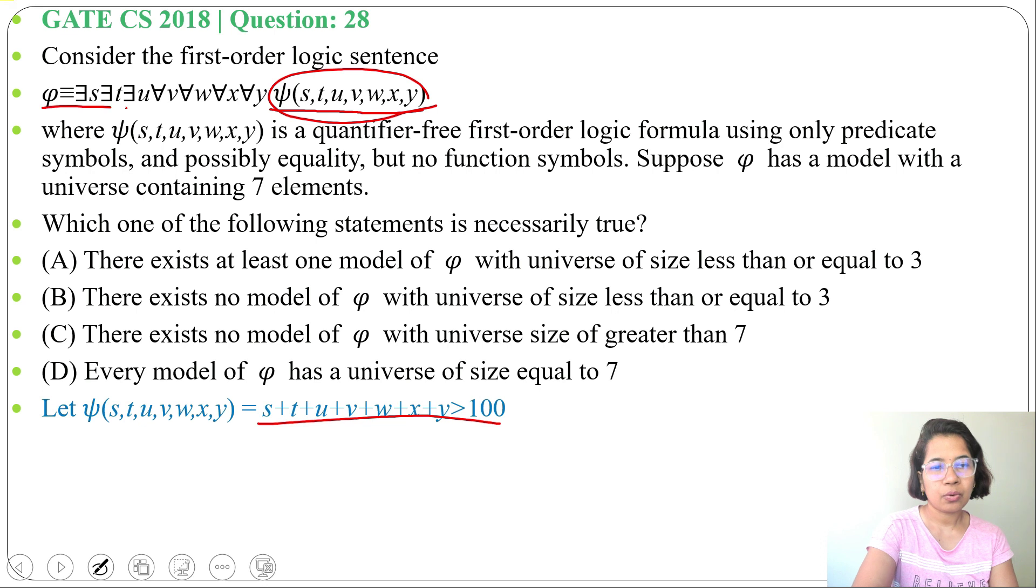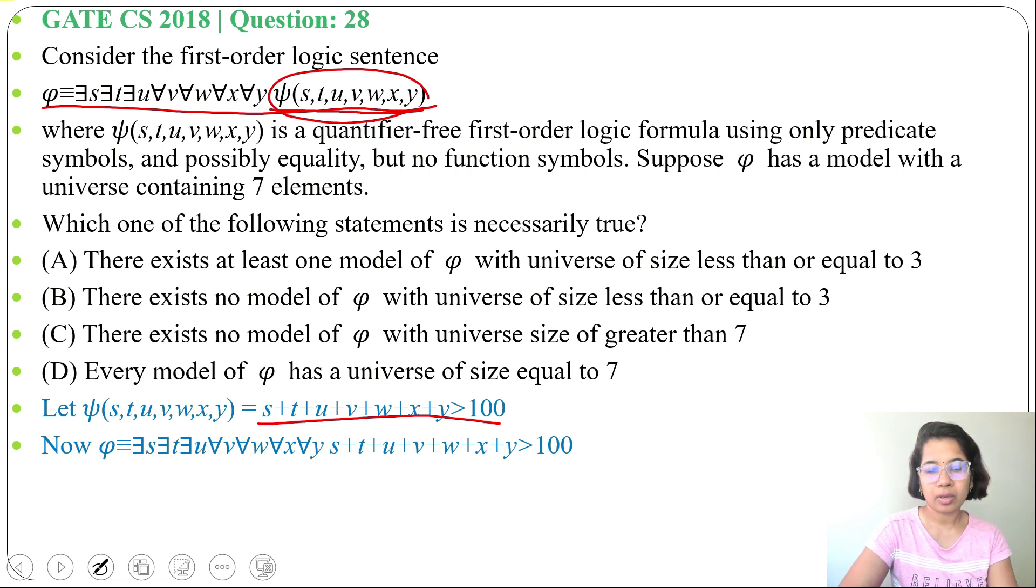Now this whole logical sentence we can write as: there exists s, there exists t, there exists u, then for all v, for all w, for all x, for all y, s+t+u+v+w+x+y greater than 100.